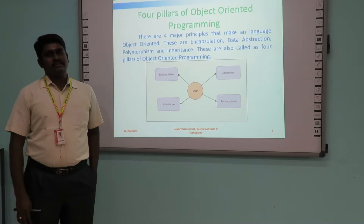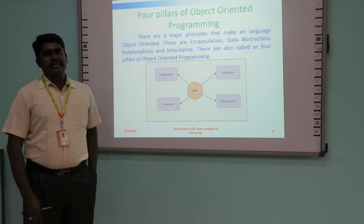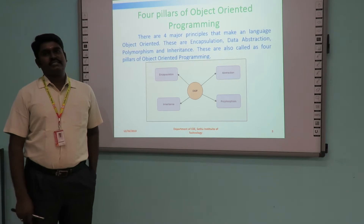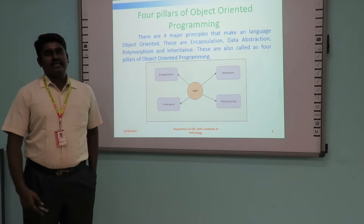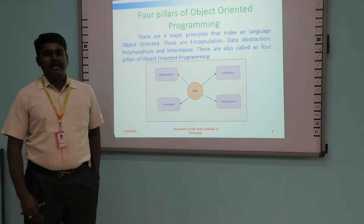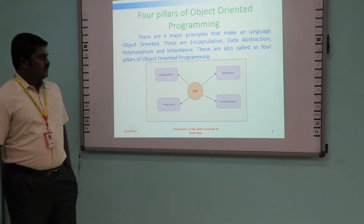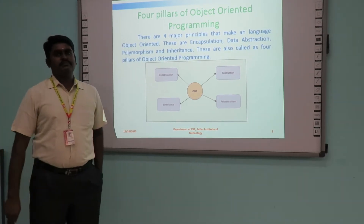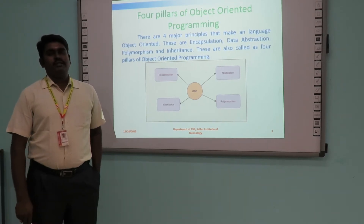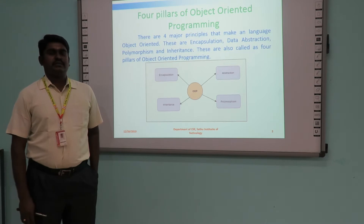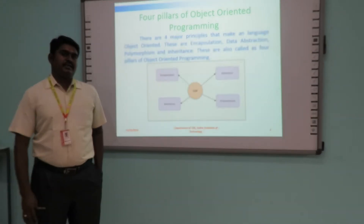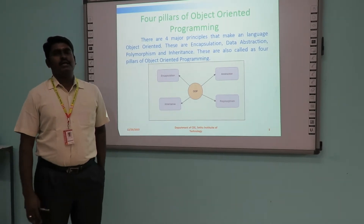Next one is inheritance — that is today's discussion. Inheritance is the process of creating new classes from the existing base class. The inherited class will have both the properties of the base class and the inherited class. Next one is polymorphism — the ability to have more than one form: more than one function with the same name but with different parameters. We call it polymorphism.